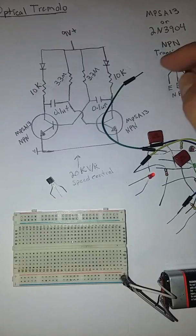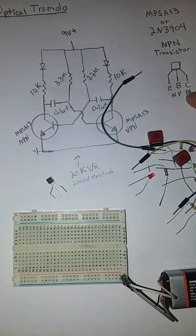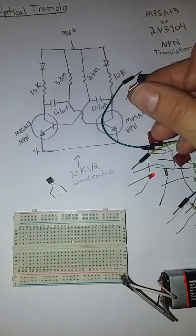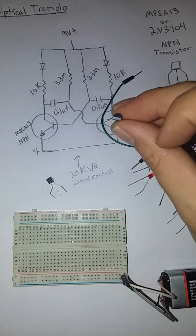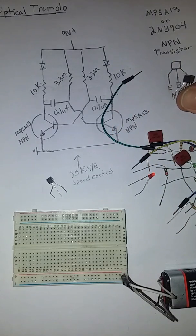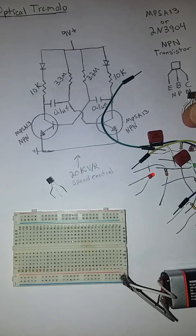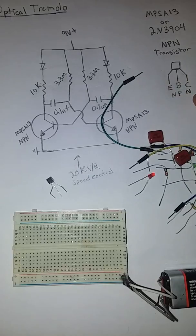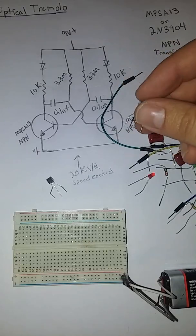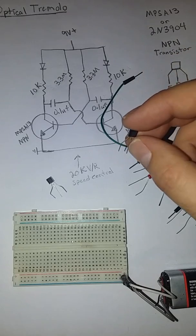Your transistor has an emitter, a base, and a collector. If you're looking at it, you can see it has a flat side and a round side. If you're holding with the flat side facing you, that's how the pins are arranged. So you've got the emitter there on your left if you're looking at it like that.